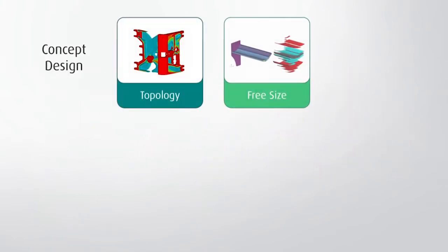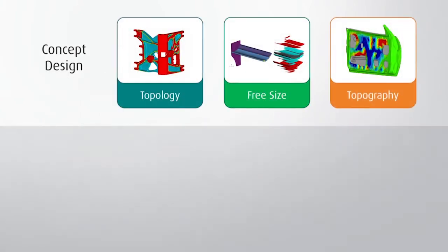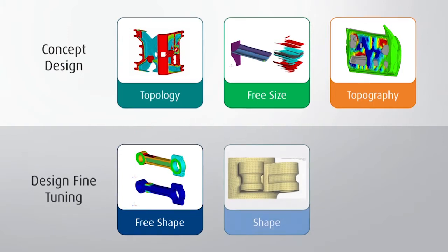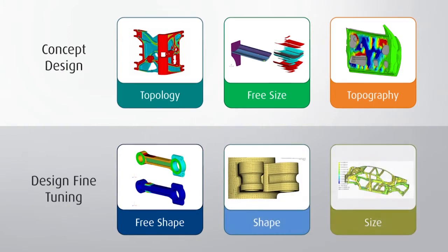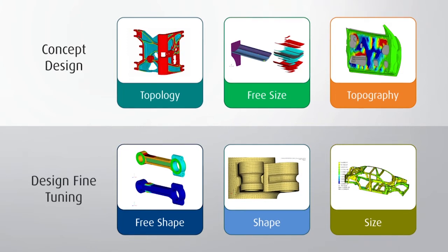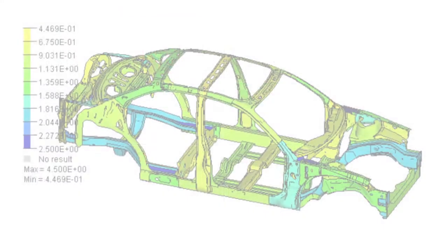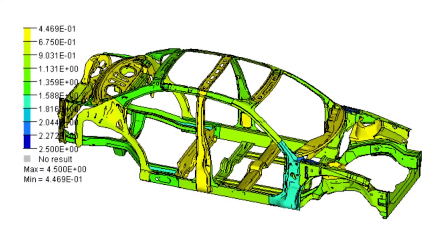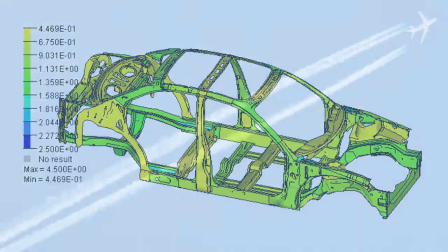Optistruct's optimization engine allows users to combine topology, topography, and size and shape optimization methods to create better and more alternative design proposals, leading to structurally sound and lightweight design. The seamless integration of gradient-based optimization methods makes multi-disciplinary size and shape optimization easy to use, robust, and remarkably fast.